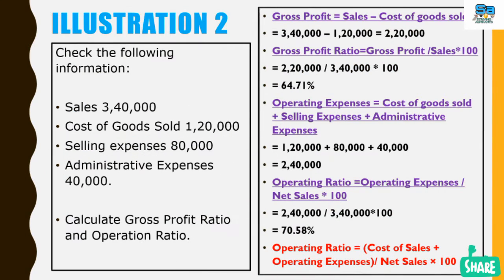Now let us check the second example. From the following information, find out gross profit ratio and operating ratio. Sales: 3,40,000; cost of goods sold: 1,20,000; selling expense: 80,000; administration expense: 40,000. Applying the formula: gross profit equals sales minus cost of goods sold — 3,40,000 minus 1,20,000 gives 2,20,000 as gross profit.